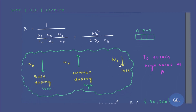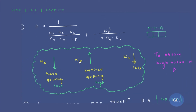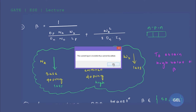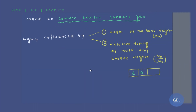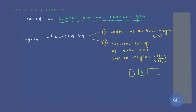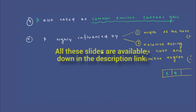The width of the base region and the relative doping between the base and emitter regions are the two key factors that always influence your current amplification factor beta. Relative doping between emitter and base regions is very important to keep in mind.